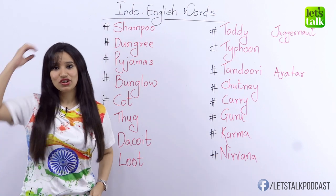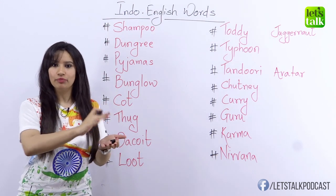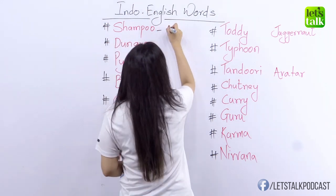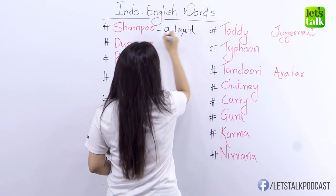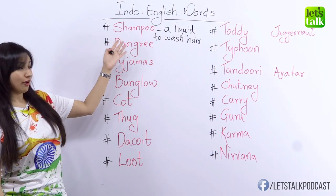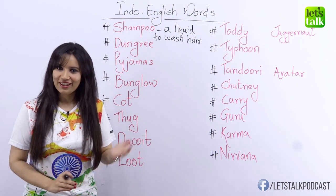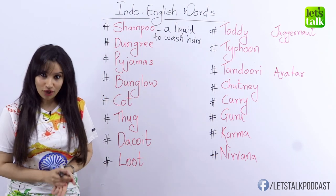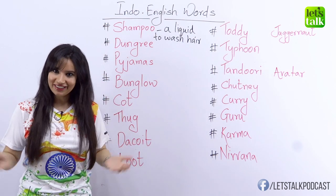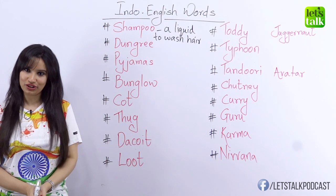We start with nouns — words that have passed into English and that we use very often. The first word is shampoo. Have you shampooed your hair this morning? Shampoo means to wash your hair using a frothy liquid. This comes from the Hindi word 'champi,' which means to press your hair and move it, touching your head so that you feel more relaxed. That's where we get the word shampoo.